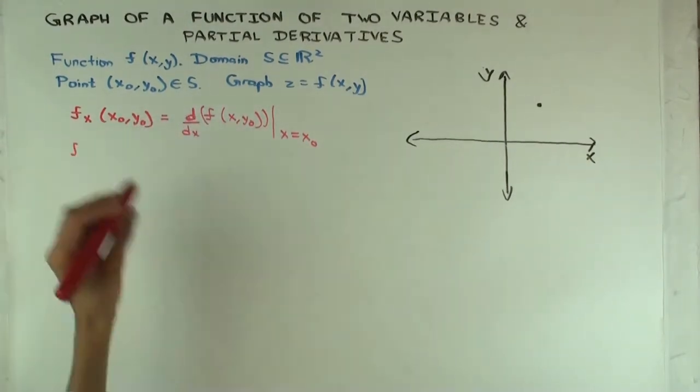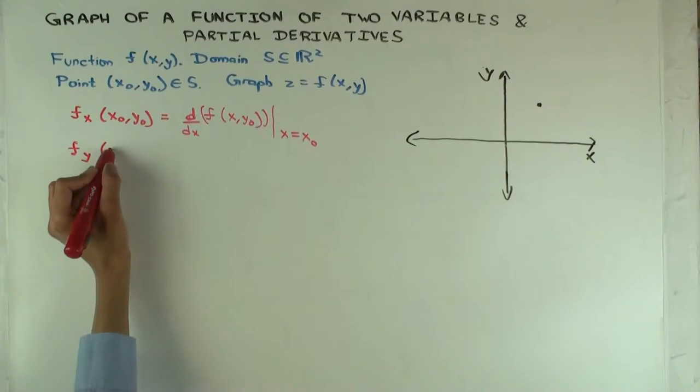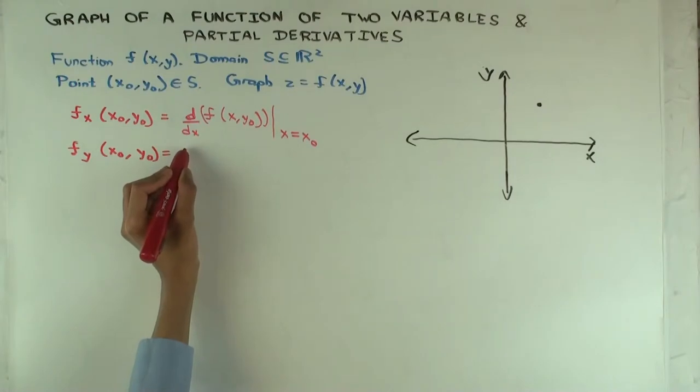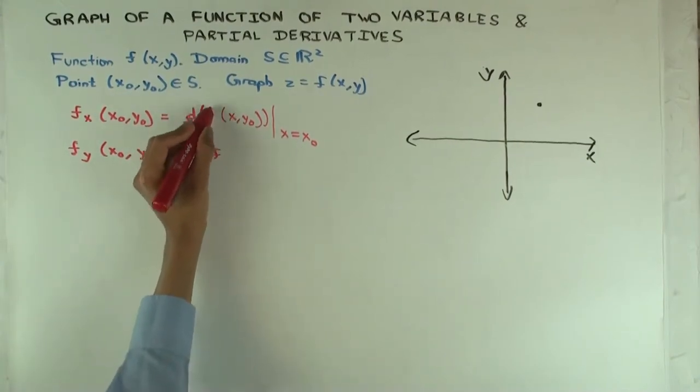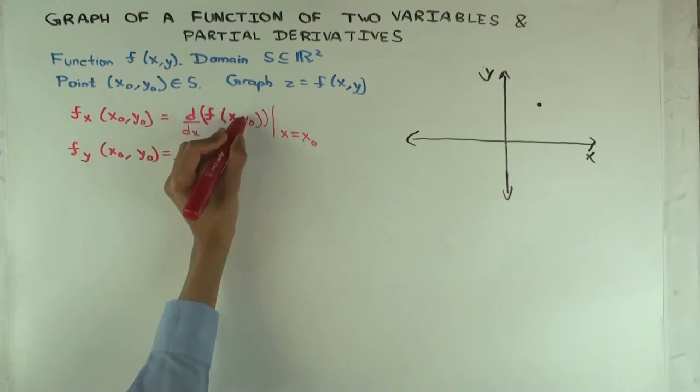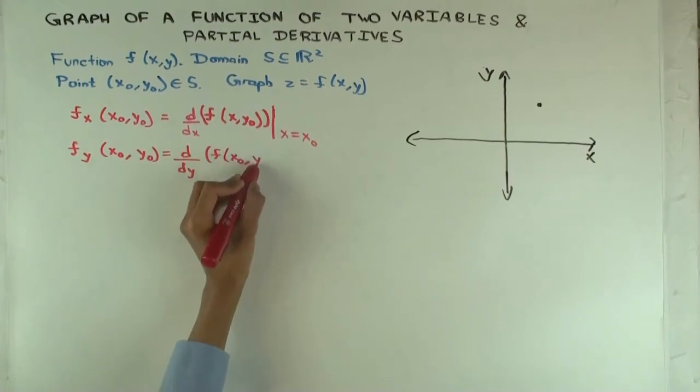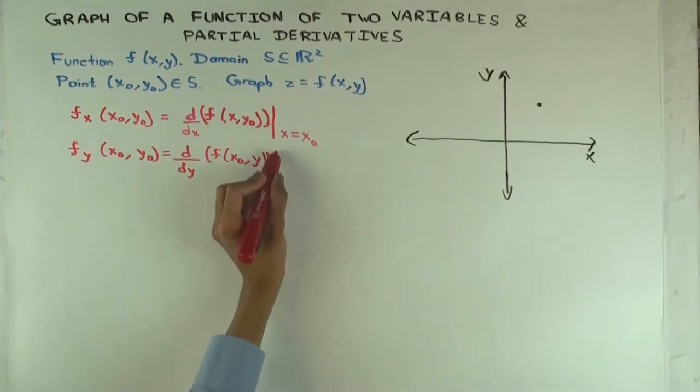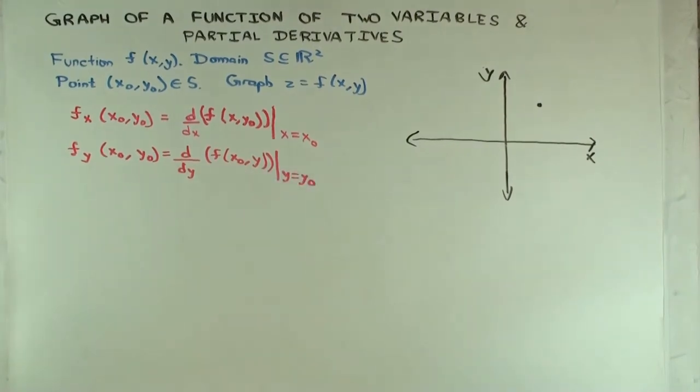Okay, let's just do the similar thing for the other one. Okay, so f sub y, x0, y0, well, what's that going to be? The ordinary derivative with respect to y of what? So, this one was x, y0, the previous one, and this is x0, y. Why do we flip? Because now we are fixing x0 and varying y, the differentiating with respect to y, and evaluate at y0. Okay, so these are the definitions.